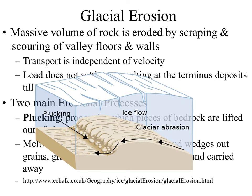Glacial erosion is both a constructive and a destructive force. Constructive is when you get deposition — we'll talk about that next. First, we talk about the destructive side. Glaciers are able to scour whole valleys, pick up a bunch of material, and drop it elsewhere. Massive volumes of rock are eroded by scraping and scouring of valley floors and walls. The glacier moves through a V-shaped valley and literally scours out and makes a U-shaped valley, going through like a bulldozer — scraping everything out, leaving rocks unsupported so they fall.